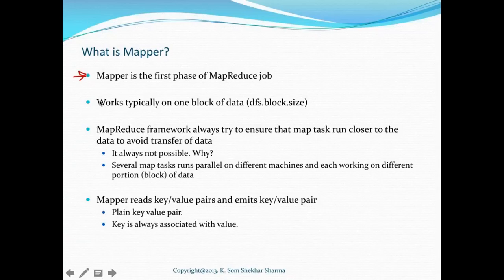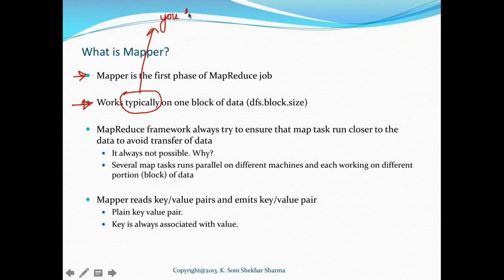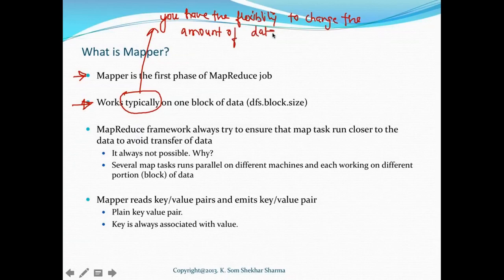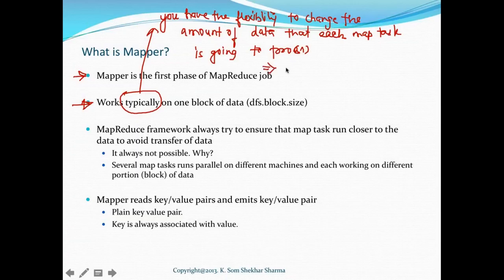A MapReduce job starts with a map task and ends with a reduce task. If anyone asks whether you can have a MapReduce job with zero map tasks, the answer is no — you must have at least one map task. It typically works on one block of data. The word 'typically' means you have the flexibility to change the amount of data each map task processes by changing the input split size.